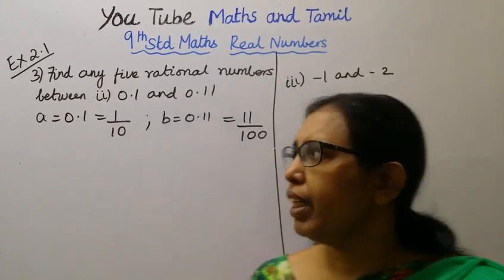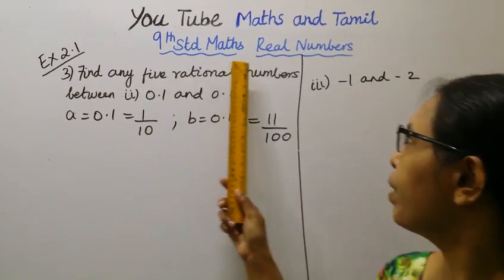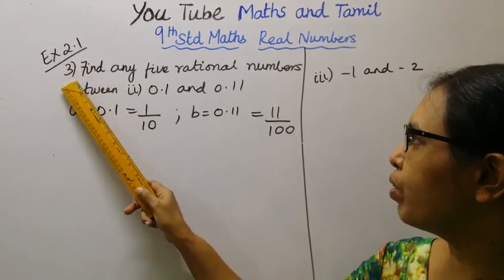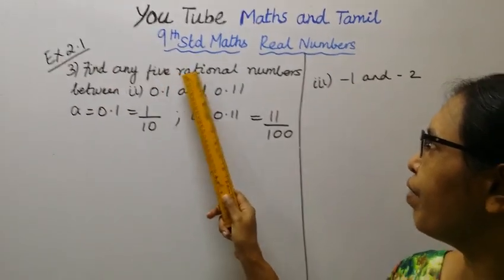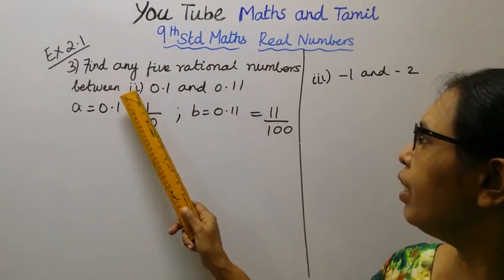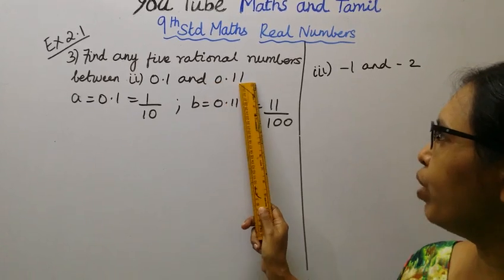Hello students, welcome to Maths and Tamil channel. 9th standard maths, real numbers, exercise 2.1, 3rd problem. Find any five rational numbers between 0.1 and 0.11.